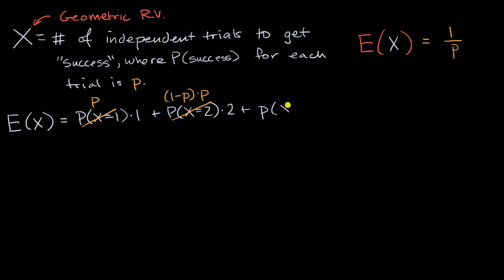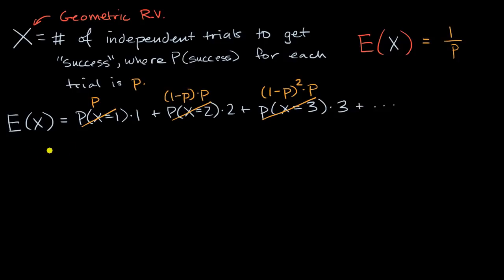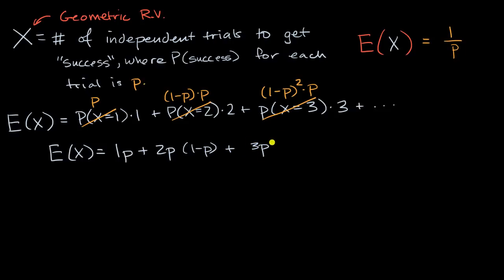So the probability that x equals three times three, and we keep going on and on. The probability that x equals three is: we need two unsuccessful trials, so the probability of two unsuccessful trials is one minus p squared, and then one successful trial. So the expected value of x is equal to one·p plus two·p·(one minus p) plus three·p·(one minus p) squared, and we keep going on and on forever like that.